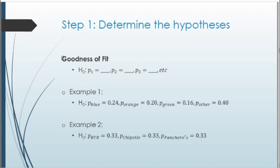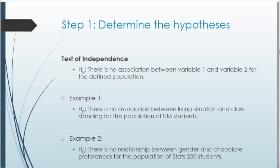For the test of independence, the null hypothesis states that there is no association between the two variables for whatever population we're working with. For our living situation and class standing example, the null is: there is no association between living situation and class standing for the population of UM students. For the chocolate preference example, the null is: there is no relationship between gender and chocolate preferences for the population of STATS 250 students.